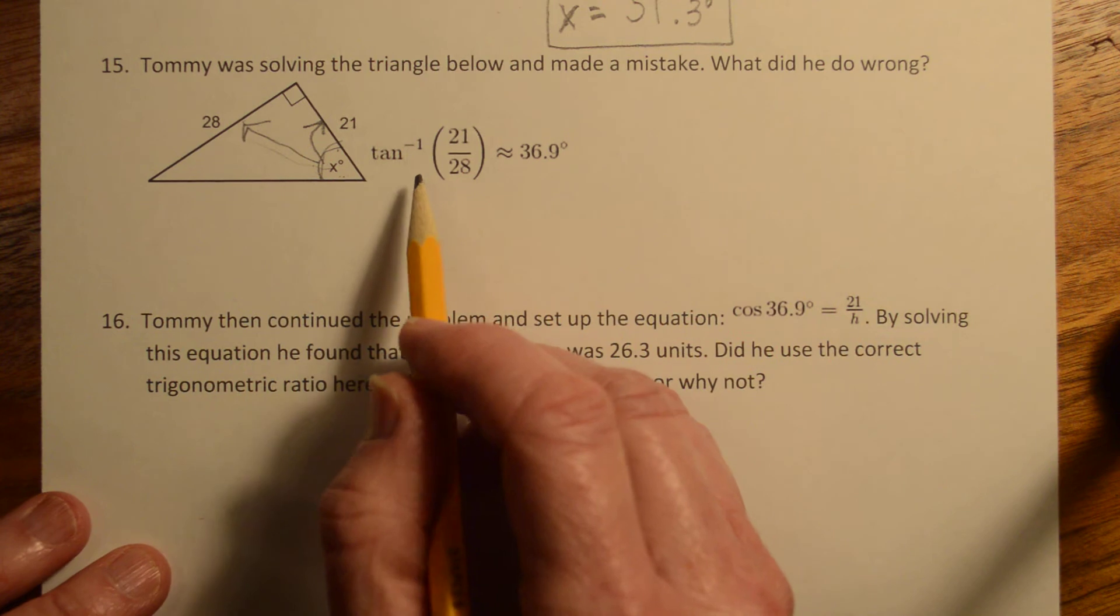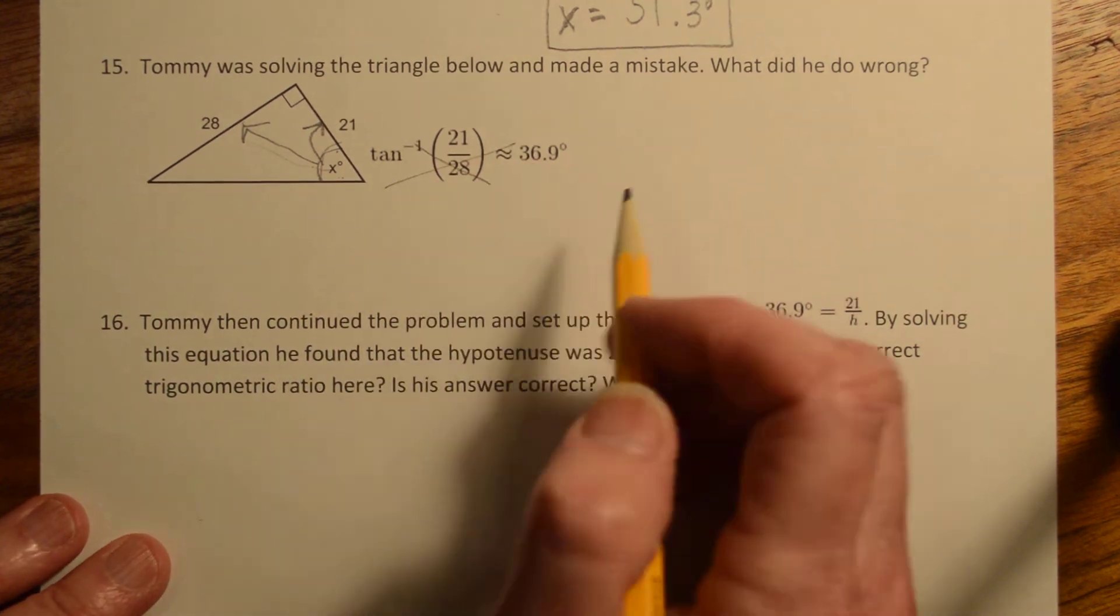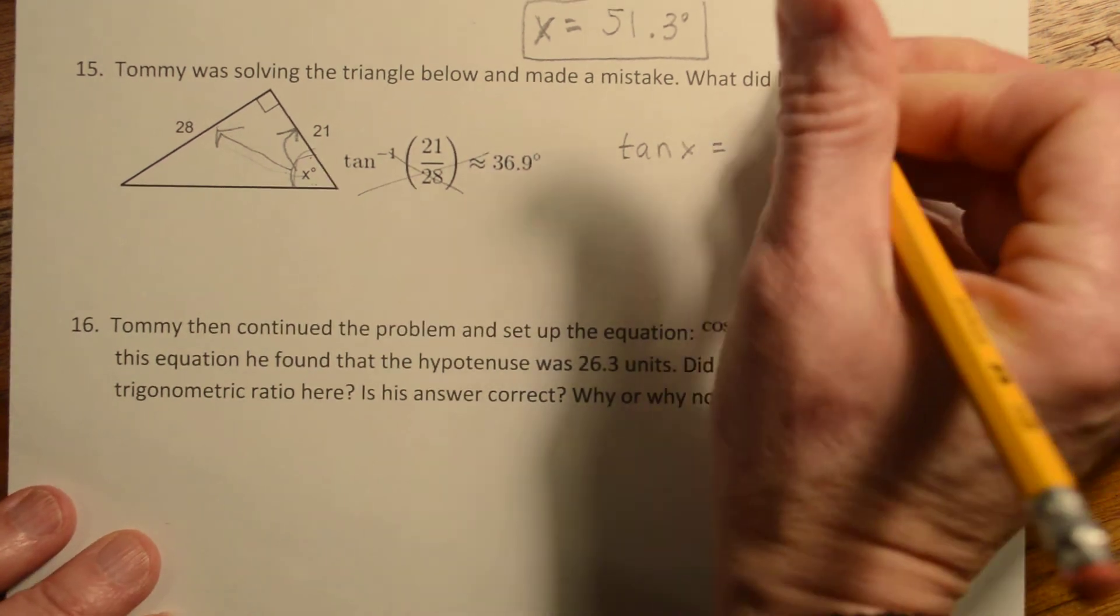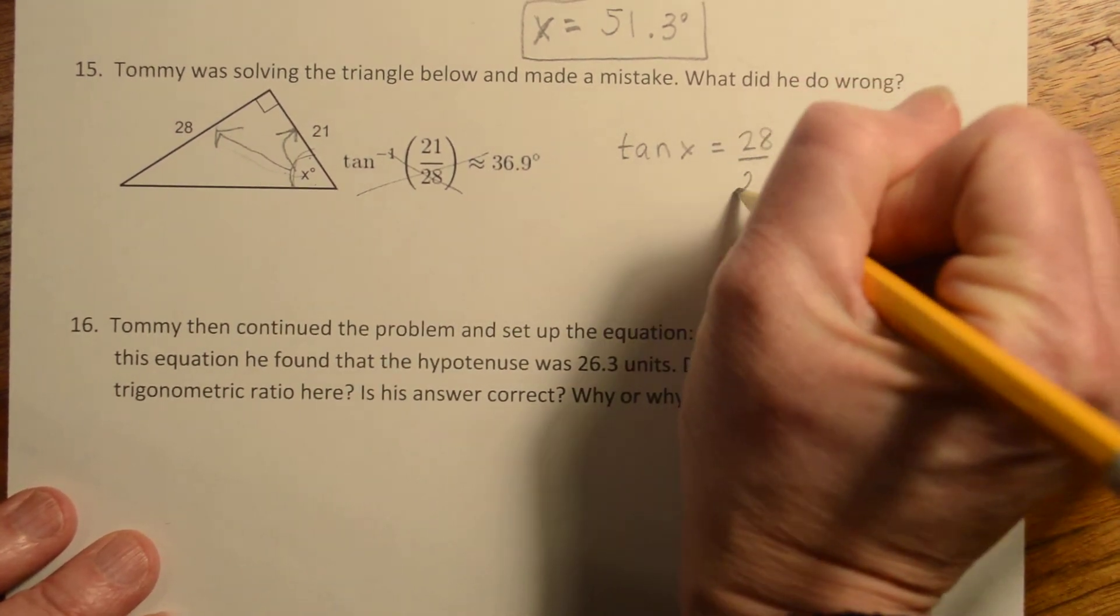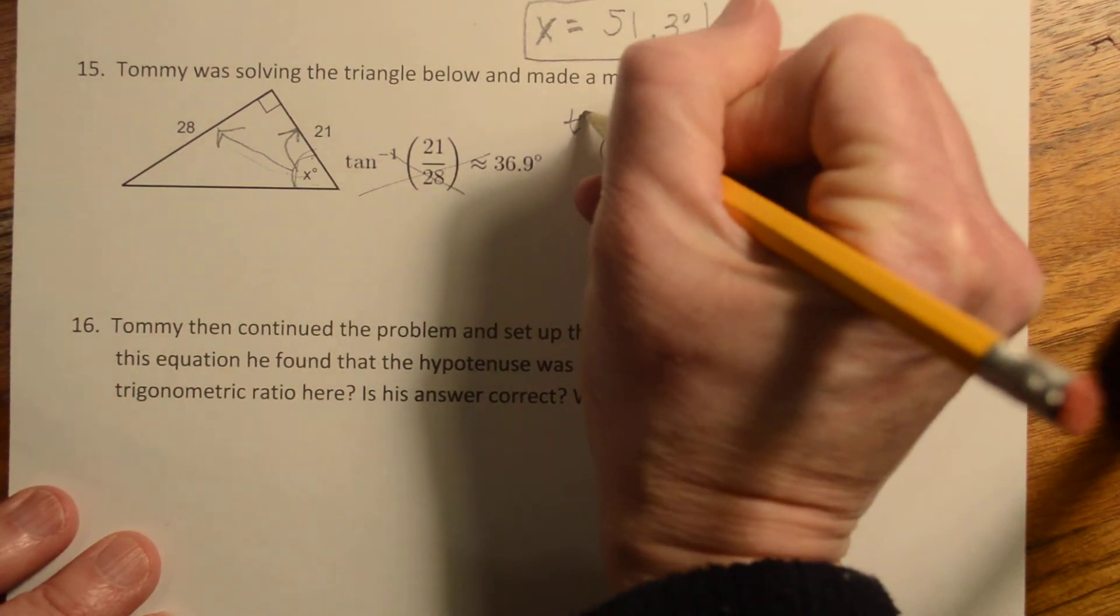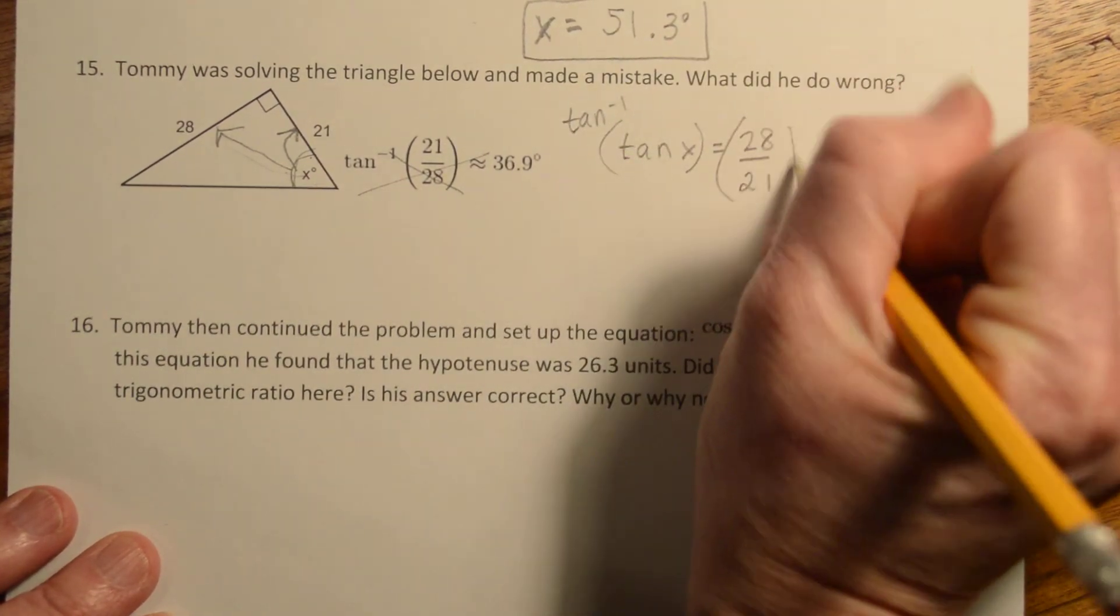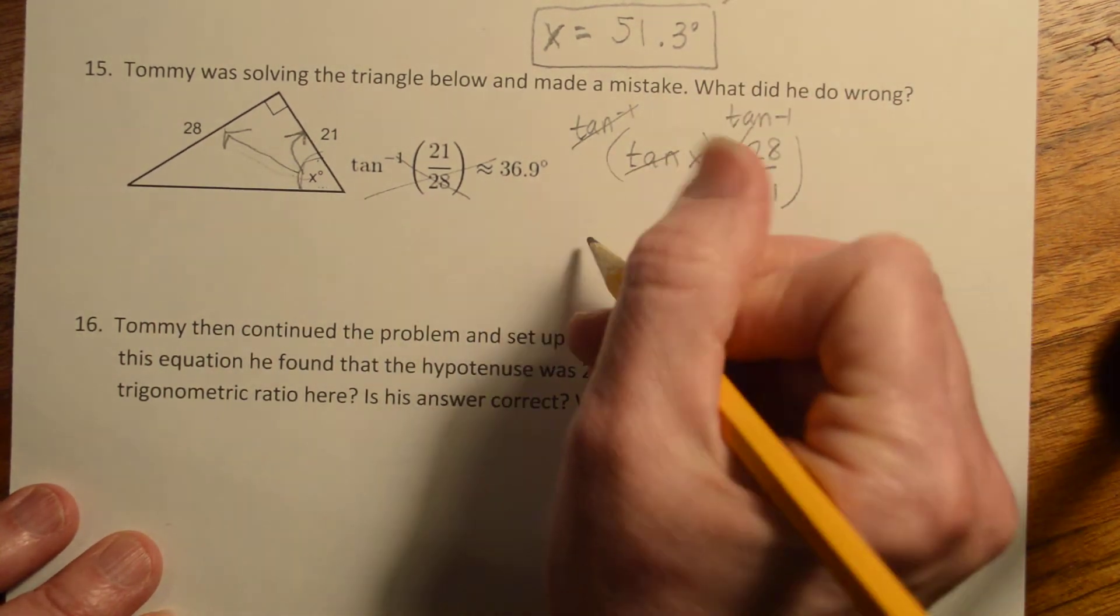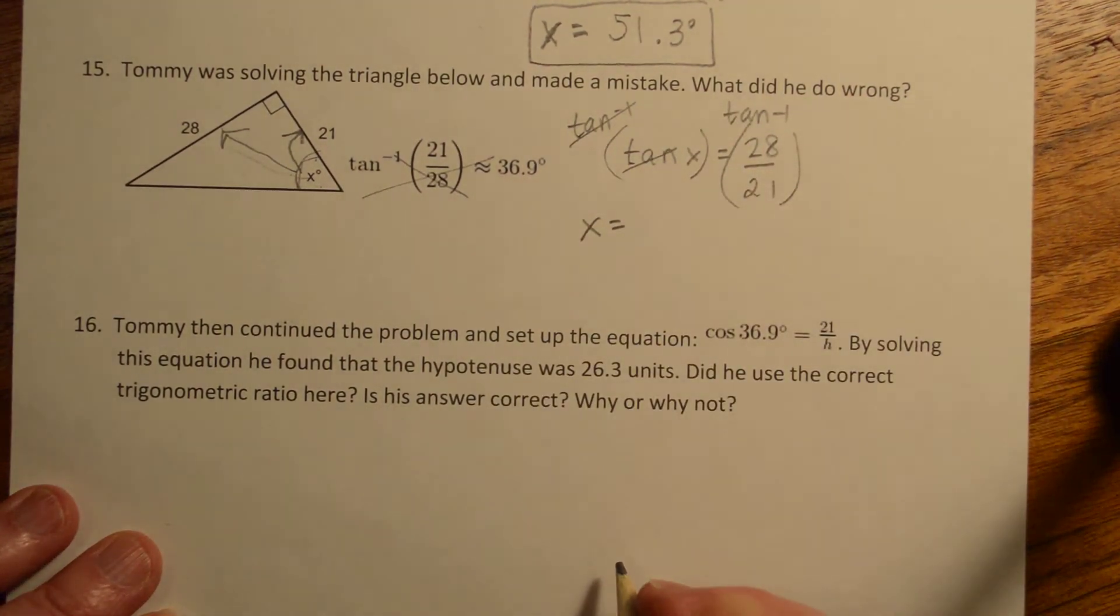So instead of tangent of 21 over 28, he should have done tangent of x equals 28 over 21. Then when he takes tan inverse of both sides, again, tan inverse and tangent will cancel out, so we just get x.